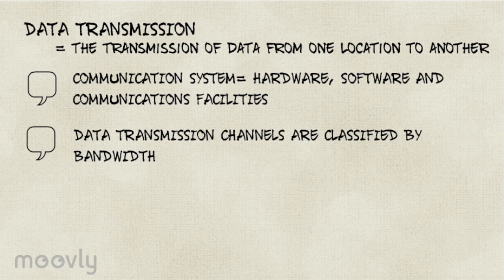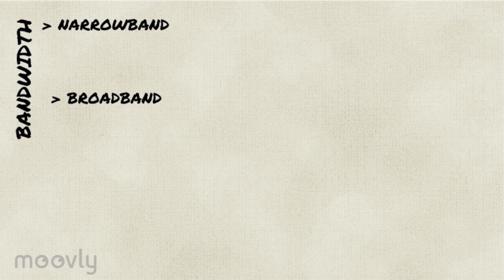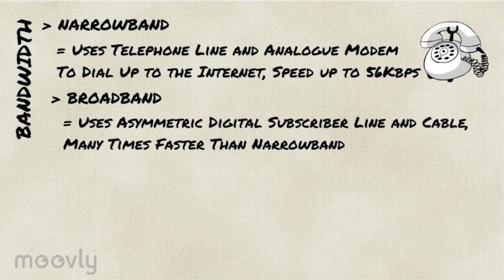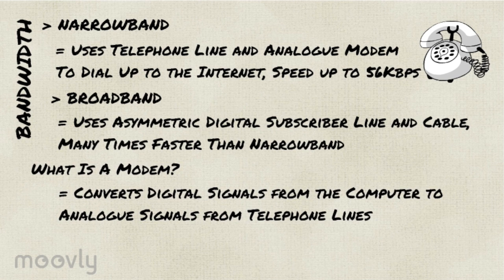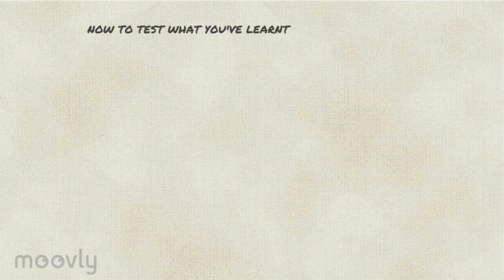The channels are classified by bandwidth, which determines the volume of transmission in a certain time. There are different bandwidths. Narrowband uses a telephone line and an analog modem and dials up to connect to the internet. Broadband is transmission using an asymmetric digital subscriber line and cable. It uses the modem which converts digital signals to analog signals and back.